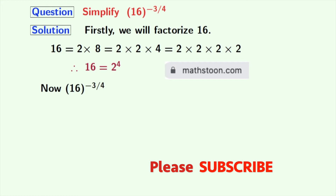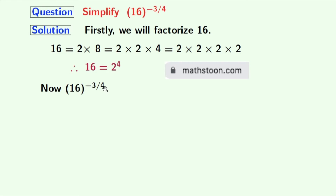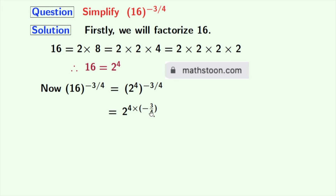Now our given expression is 16 power minus 3 by 4. Using this fact, this quantity can be written as 2 power 4, whole power minus 3 by 4. Now this can be written as 2 power 4 times minus 3 by 4.